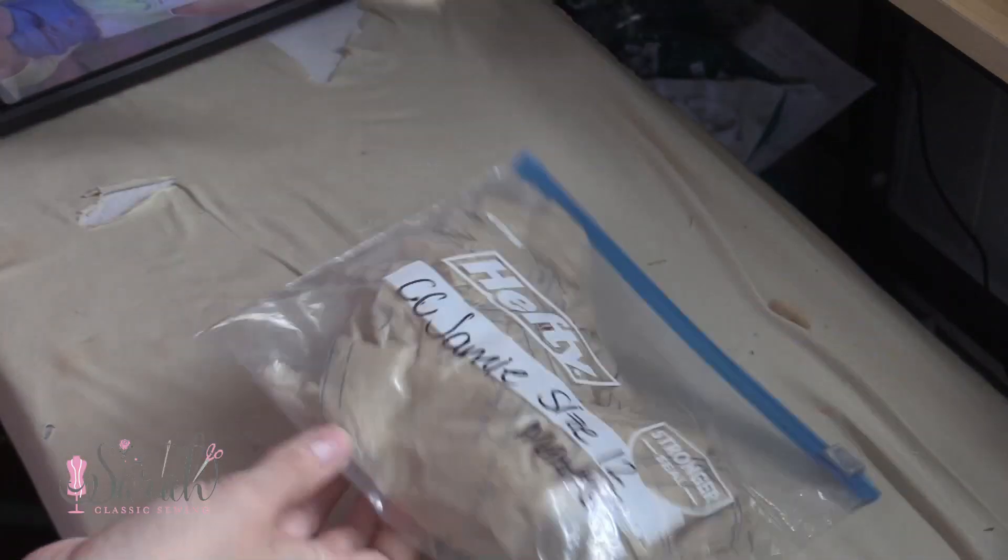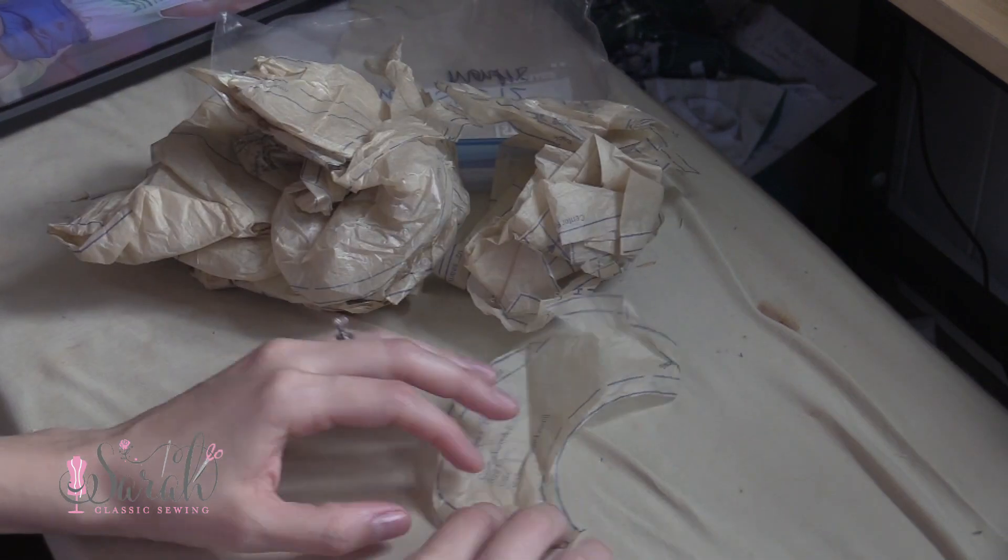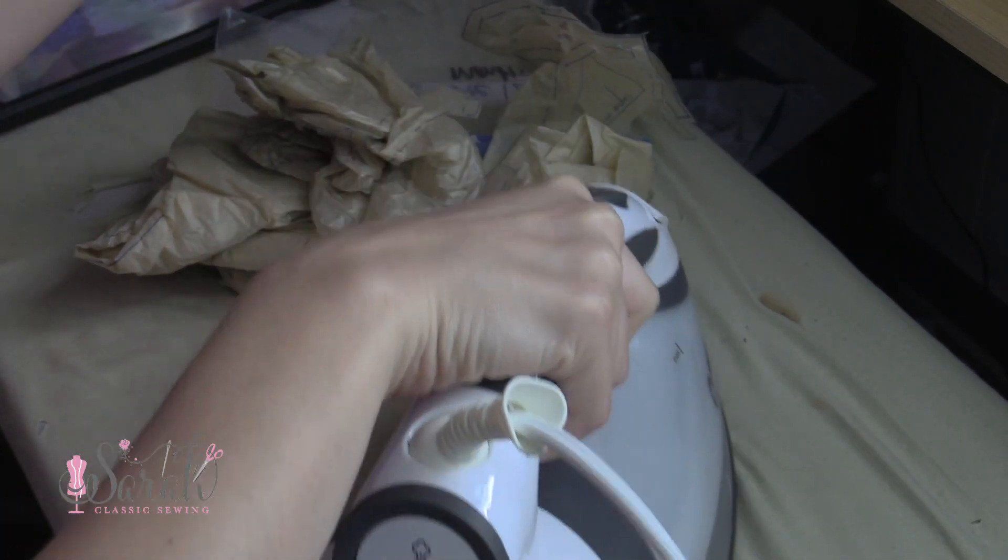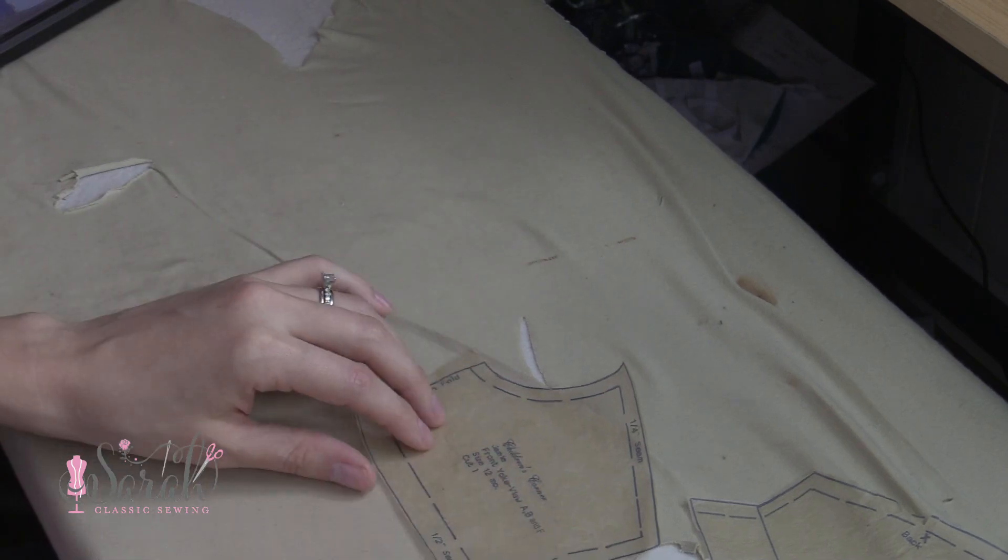So to get started, I pulled out the size 12 month pieces for my little guy and from there I'm selecting the collar, sleeve, yoke back, and yoke front pieces.